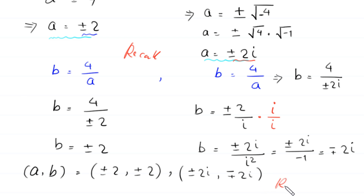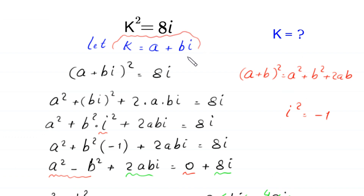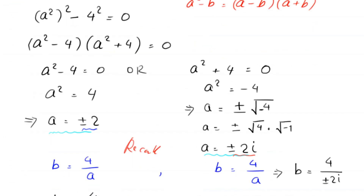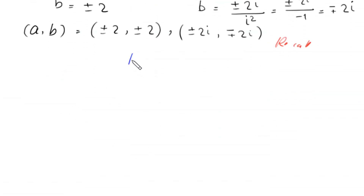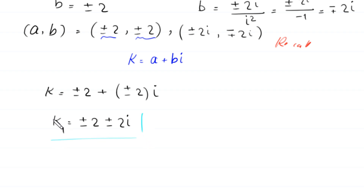To find the value of k, recall that k equals a plus bi. When a equals plus or minus 2 and b equals plus or minus 2, then k equals plus or minus 2 plus plus or minus 2 times i. So the first solution is k equals plus or minus 2 plus plus or minus 2i.